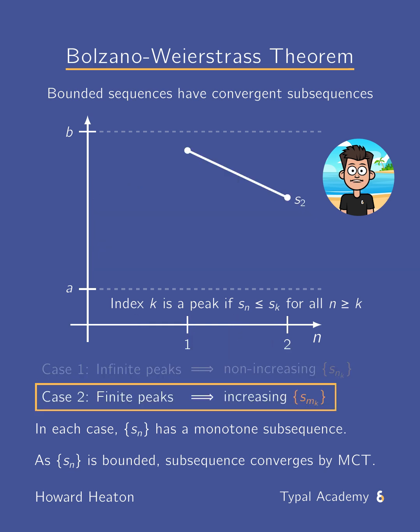Alternatively, if there is a finite number of peaks, then we can find an orange subsequence where each successive dot is increasing.